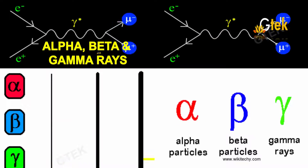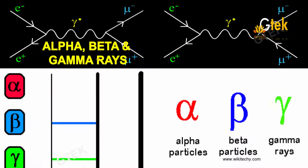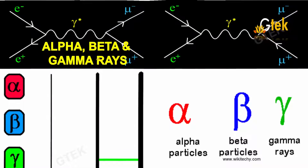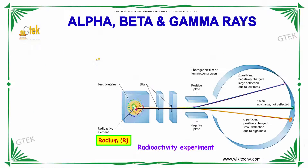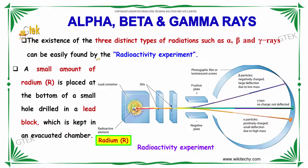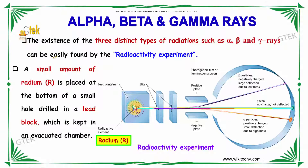Now let's talk about alpha, beta, and gamma rays in detail. The existence of three different types of radiation — alpha, beta, and gamma — can be easily found by the radioactivity experiment.